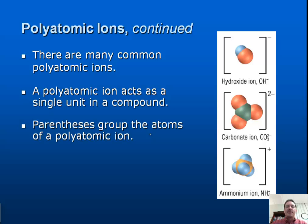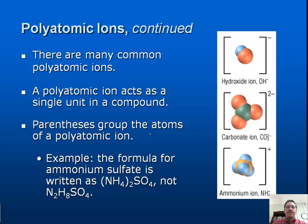We put parentheses here to group the atoms. For example, the formula for ammonium sulfate is written as (NH4)2SO4, not N2H8SO4 — we're grouping two polyatomics. Ammonium has a plus one charge, and sulfate has a negative two charge, so we need two ammonium ions to cancel the negative two charge.